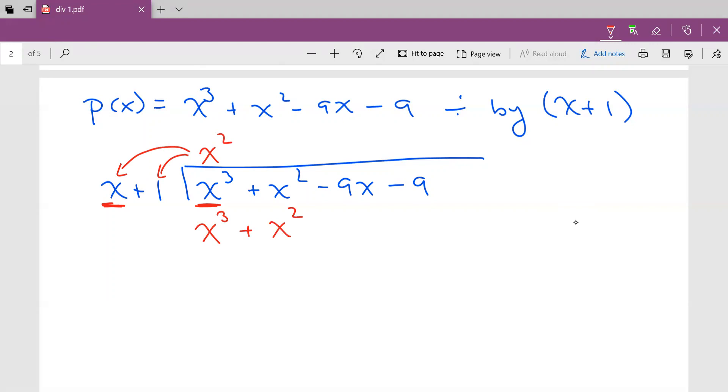Now, when we were doing long division when we were little guys, we would then subtract. So I subtract x² minus x², that's 0. x³ minus x³, that's 0. Perfect.